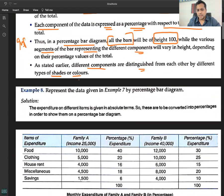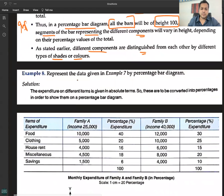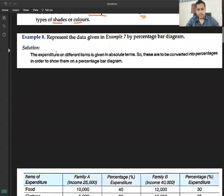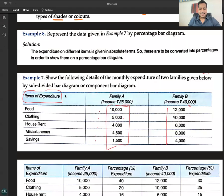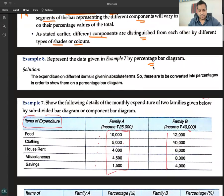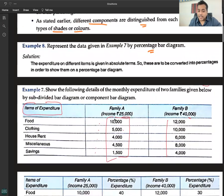As stated earlier, different components are distinguished from each other by different shades or colors. Example 8: use the same data as Example 7. The same Example 7 data, the same data.